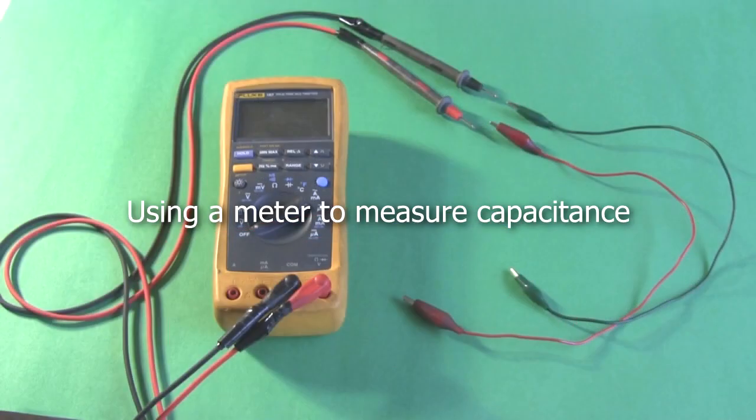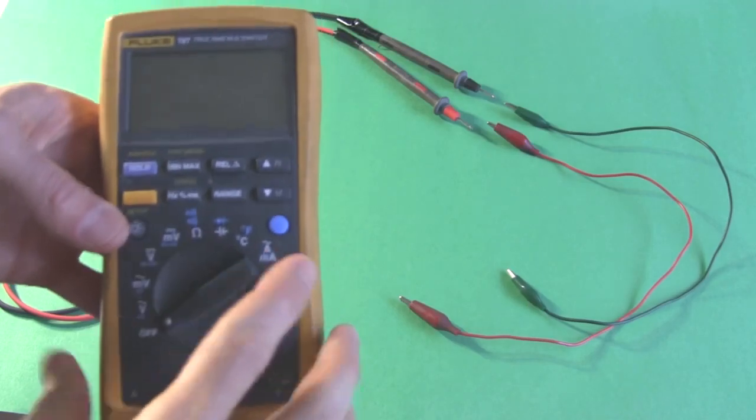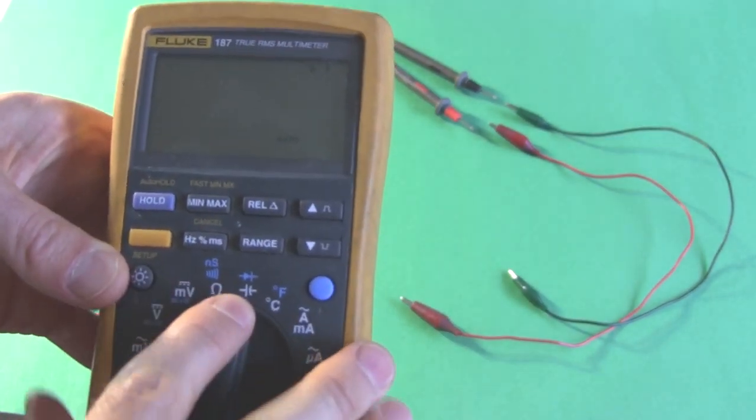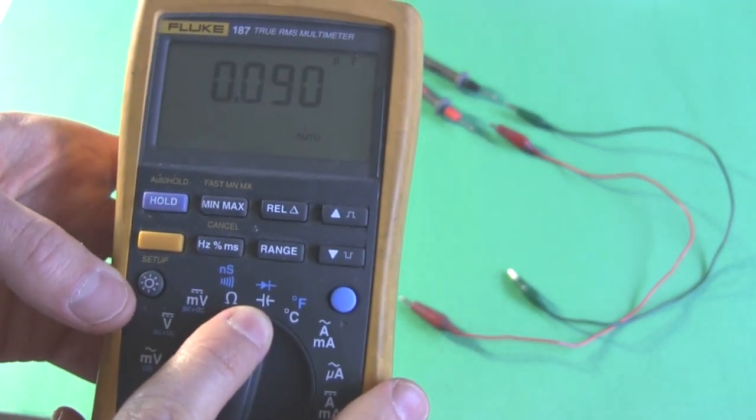It also helps to have a meter that has a capacitor setting like this one. This meter has a capacitance scale, just this small symbol here for a capacitor.